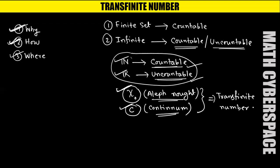Let's see some algebraic properties of transfinite numbers. Number one: addition. What will be the addition of these two transfinite numbers? Aleph naught plus C equals the larger of the two numbers. Since Aleph naught denotes a countable set and C (continuum) denotes an uncountable set, continuum is obviously larger than Aleph naught. So the sum Aleph naught plus C equals C.